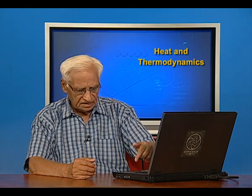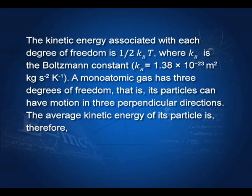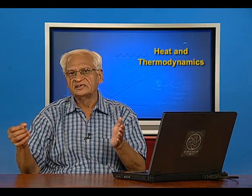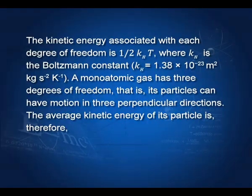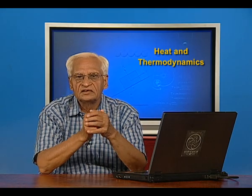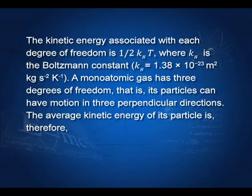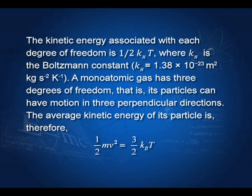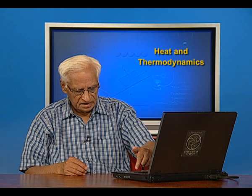What is the kinetic interpretation of temperature? The kinetic energy associated with each degree of freedom is (1/2) k_B T, where k_B is Boltzmann's constant. A monatomic gas has three degrees of freedom — it can move in the x, y, and z directions. With each degree of freedom we assign kinetic energy (1/2) k_B T, so the total kinetic energy with three degrees of freedom is (3/2) k_B T. This equals (1/2) mv², where m is the mass of the particle. From this, we can associate kinetic energy with temperature — that is the explanation of temperature in the kinetic theory of gases.